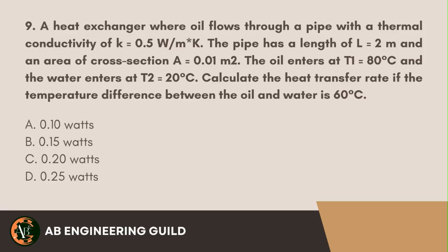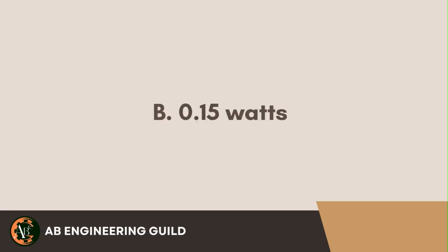Question 9: Consider a heat exchanger where oil is flowing through a pipe that has a thermal conductivity of 0.5 watts per meter kelvin. The pipe is 2 meters long and has a cross-sectional area of 0.01 square meters. The oil enters at 80°C while water enters at 20°C. If the temperature difference between the oil and the water is 60°C, what is the rate of heat transfer through the pipe? A. 0.10 watts. B. 0.15 watts. C. 0.20 watts. D. 0.25 watts. Answer: B. 0.15 watts.